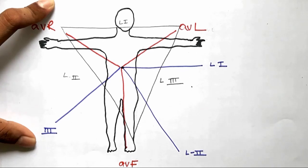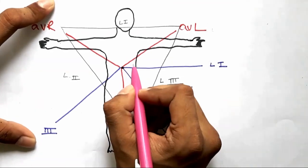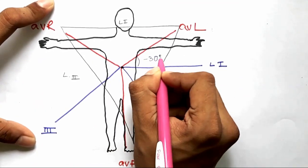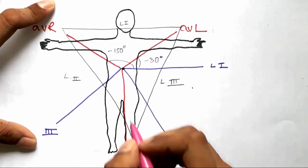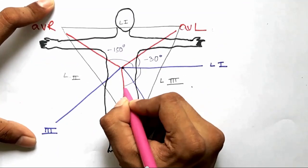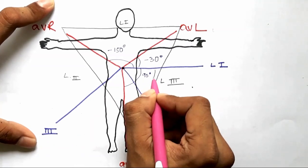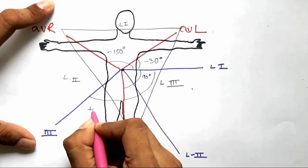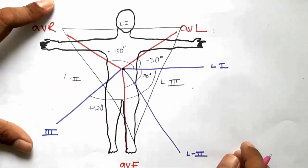AVL makes a minus 30 degree angle with lead one, minus 150 degrees with AVR, 90 degrees with AVF, and plus 120 degrees with lead three.